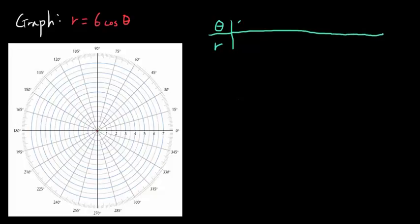Let's say theta is 0 degrees, or 0 radians. When theta is 0, r is going to be 6 times cosine of 0. Cosine of 0 is 1, so 6 times 1, or 6. So when theta is 0, you're going to go 6 to the right.